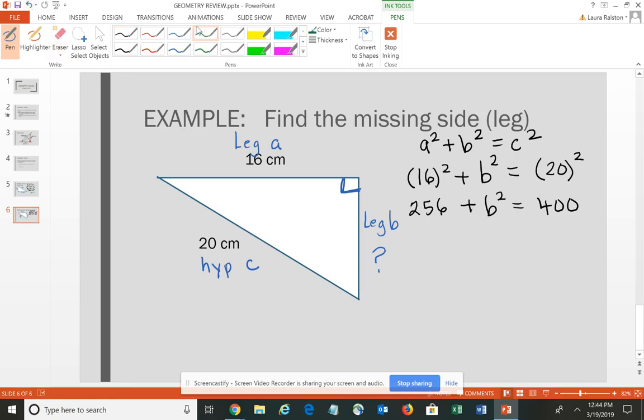Now I'll solve for b. Subtracting 256 from both sides: b² = 400 - 256 = 144. Taking the square root of both sides – and again, since we're looking at the length of a side, it must be positive – the square root of 144 is 12. So the length of leg b is 12.